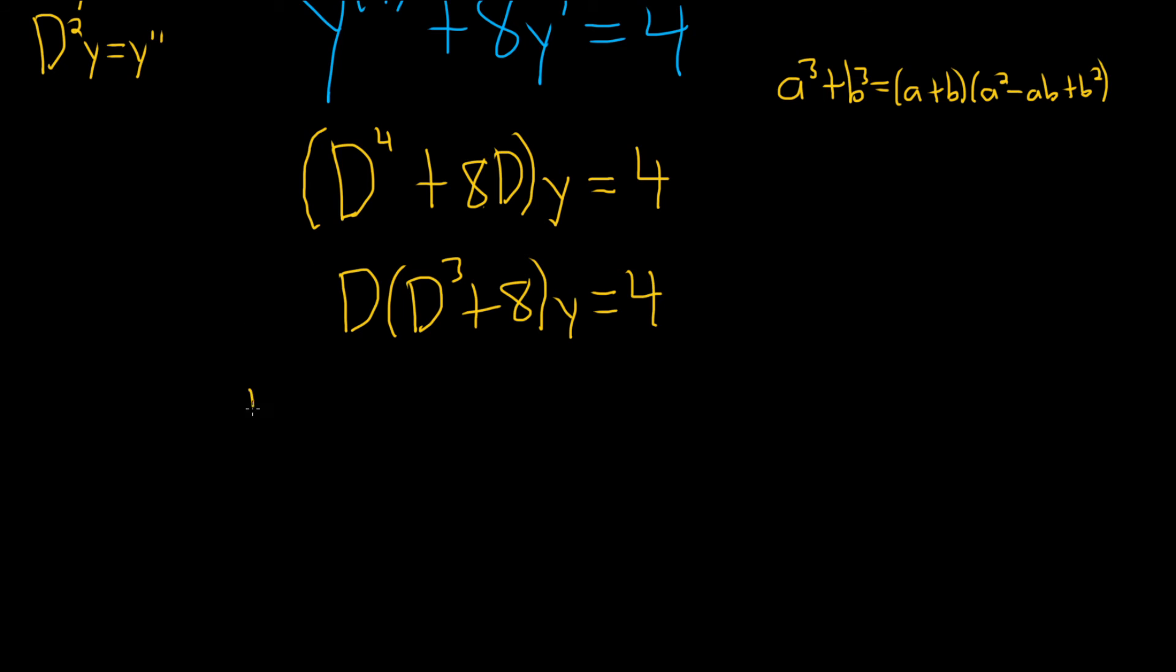It's really cool. So this is big D times (D plus 2), because 8 is 2 cubed. Then it will be D squared minus 2D—that's ab—and then plus b squared, which is 4, times y equals 4.